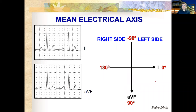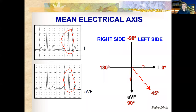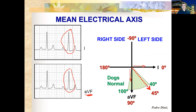Here's another scenario with the same ECG for illustration purposes: if Lead I and AVF have the same number of positive boxes, the mean electrical axis falls at about 45 degrees — in the middle. The simple dirty trick is to look at which wave has the biggest amplitude. The normal range for dogs is highlighted: 40 to 100 degrees.